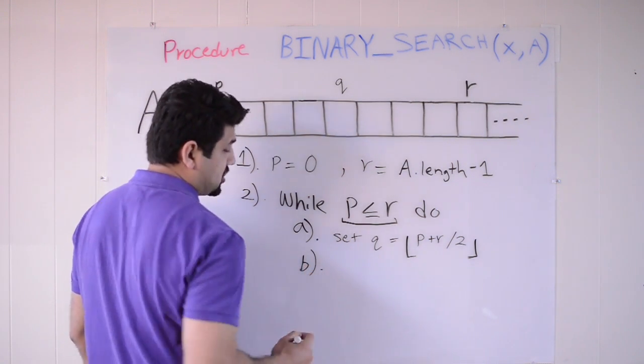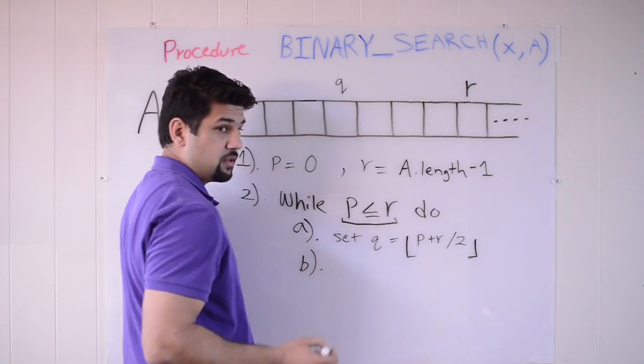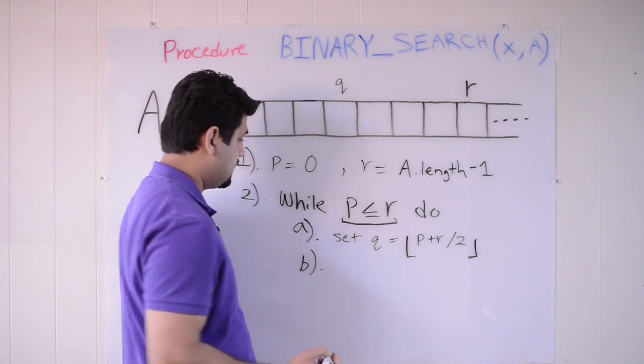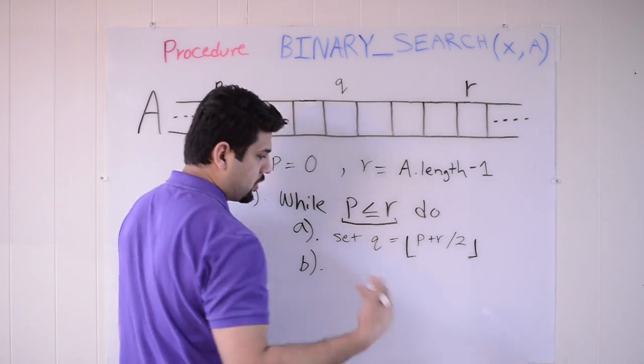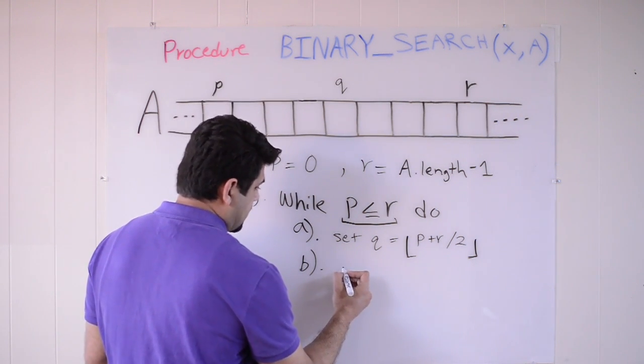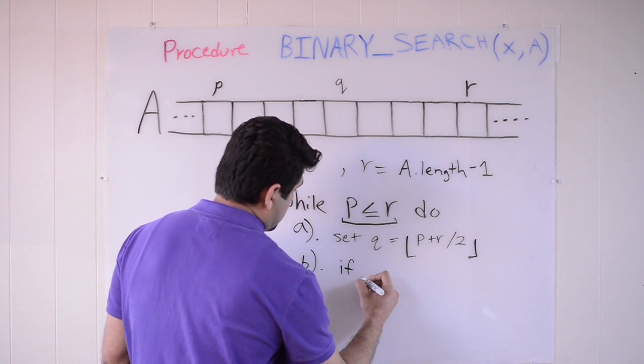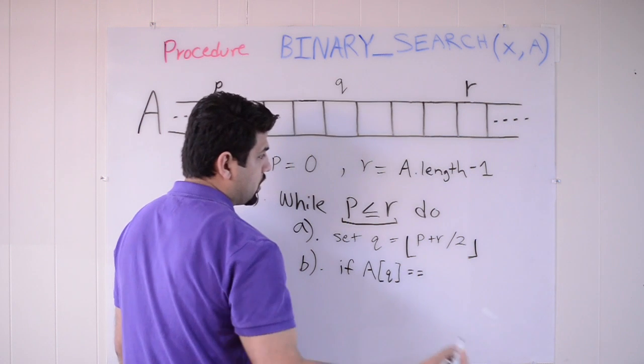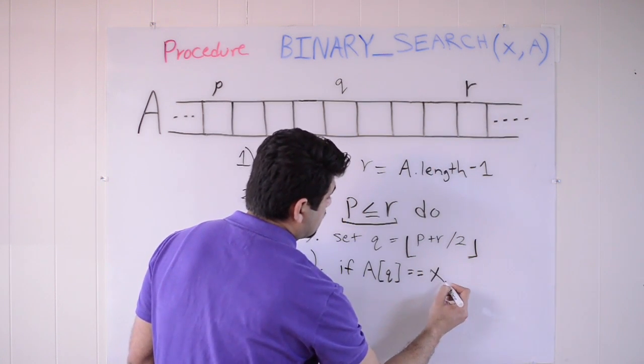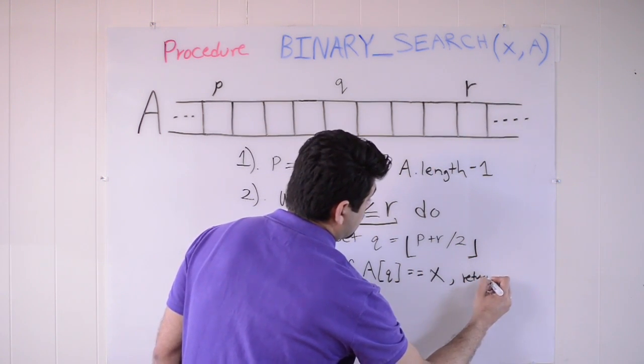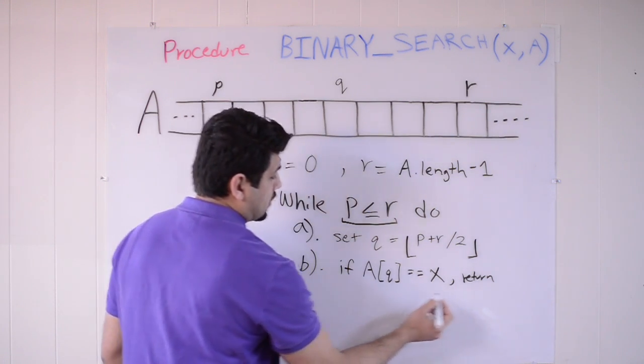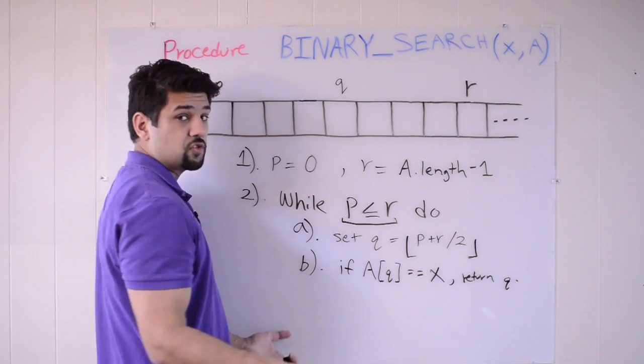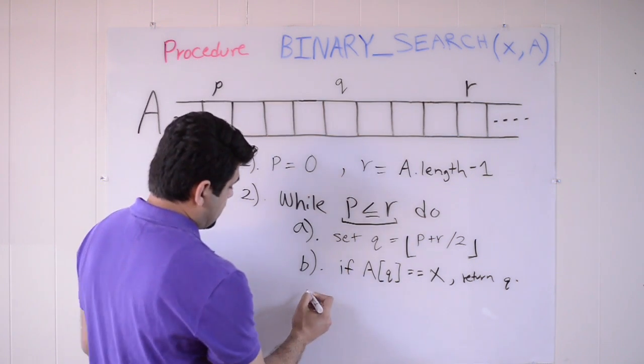So once we get that, the next step is to check whether this midpoint that we got is containing the value that we're searching for. And if it is, great, we can return out of this loop and exit the method. So we can say if a at the index position q is equal to what we are searching for, x, then we can just return the index position of q. And we're done. That will just exit out of this method and we've solved the problem.